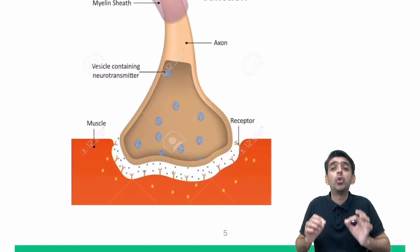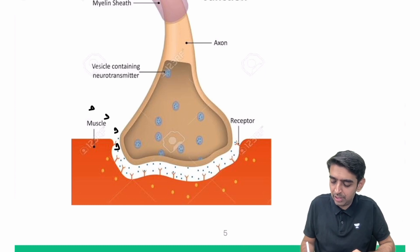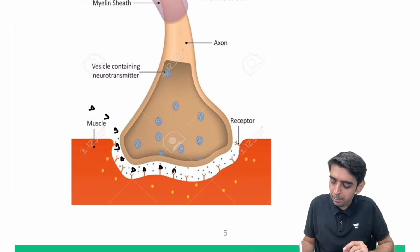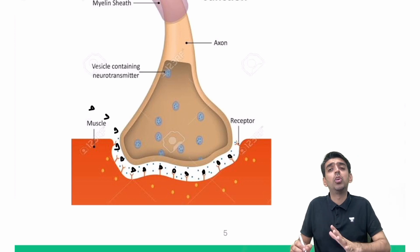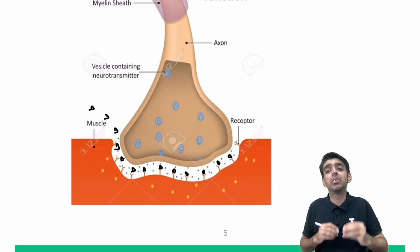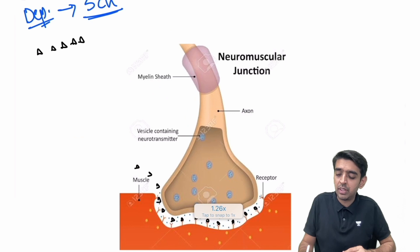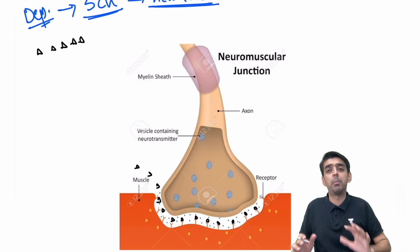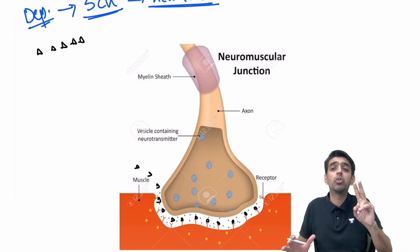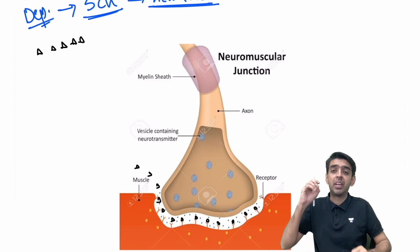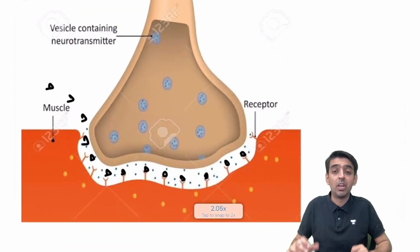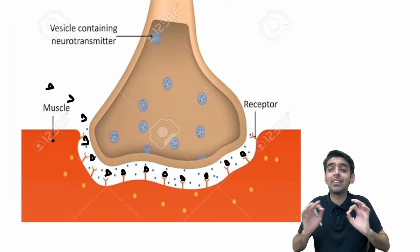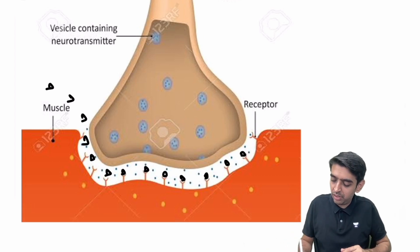Once succinylcholine enters the neuromuscular junction it comes and binds to the nicotinic cholinergic receptors at the same site. Succinylcholine is structurally nothing but two molecules of acetylcholine combined. Like acetylcholine, as soon as it enters the neuromuscular junction it brings about depolarization. It is more or less structurally similar to acetylcholine but not exactly the same.